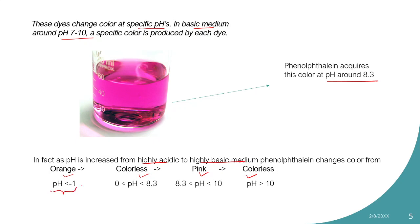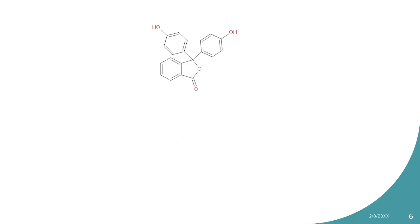At pH less than minus one, the color is orange. From acidic to neutral up to about 8.3, there is no color. After pH 8.3 you see pink color, which lasts until pH 10, and then after pH 10 it becomes colorless again. In laboratory titrations, it is recommended to perform the titration slowly because if you cross the pH 8.3 to 10 region too quickly, the color will appear and vanish very fast.